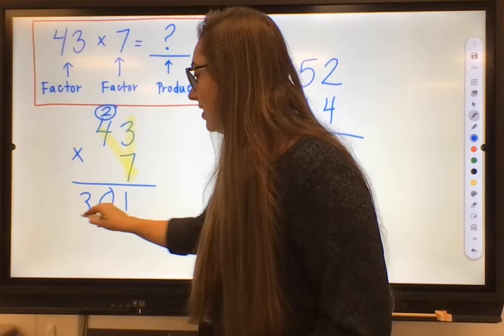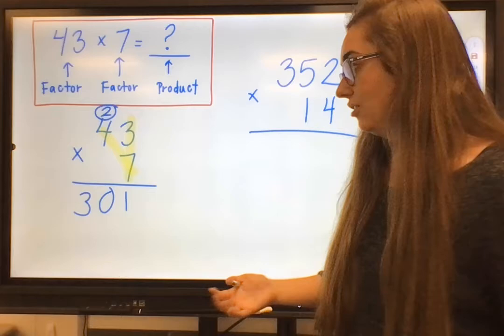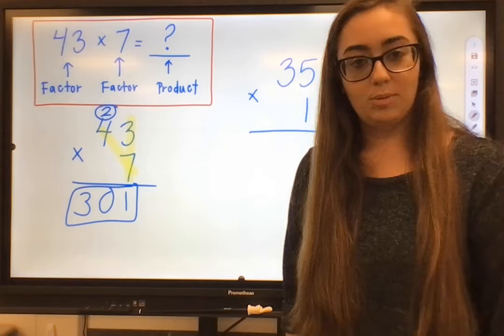So now I can put both digits here below our multiplication bar because we have gotten our final product. We've gotten our final answer. So we have all of the digits that we need. 301 would be our final product.